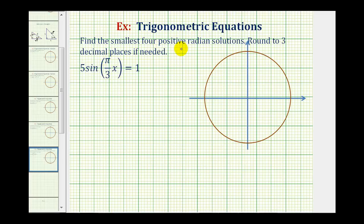We want to find the smallest four positive radian solutions to 5sin(π/3·x) = 1. Our goal here is to find the four smallest values of x that satisfy this equation.